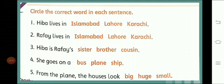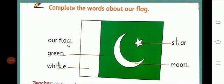Now circle the correct word in each sentence. Hiba lives in Islamabad, Lahore, or Karachi? Rafi lives in Islamabad, Lahore, or Karachi? Hiba is Rafi's sister, brother, or cousin? She goes on a bus, plane, or ship? From the plane, the houses look big, huge, or small?